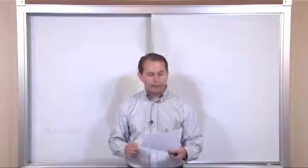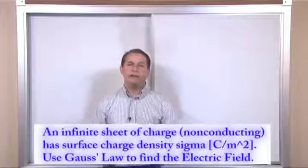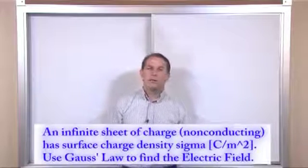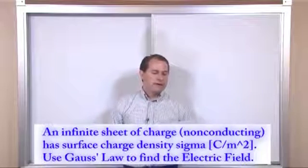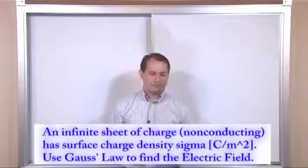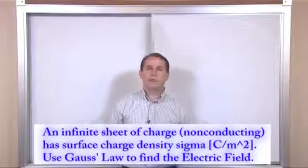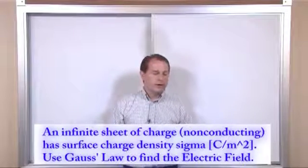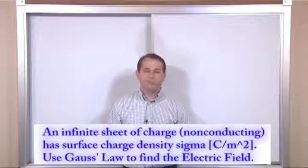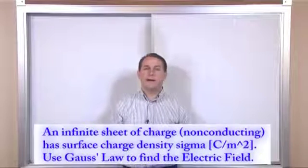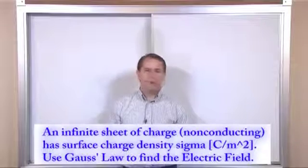The first problem says: an infinite sheet of charge, non-conducting, has a surface charge density of sigma, which is in coulombs per square meter. Use Gauss's law to find the electric field a certain distance away from that sheet. This is one of those things probably derived in your book.